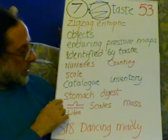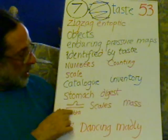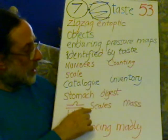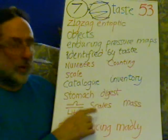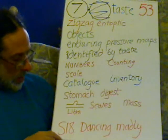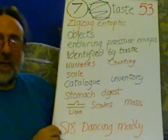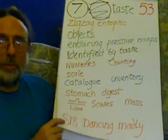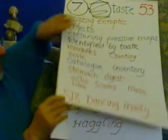Here's the stomach, symbol for Libra, which is the scales, the mass of an object. Small intestine ate, the symptom dancing madly.